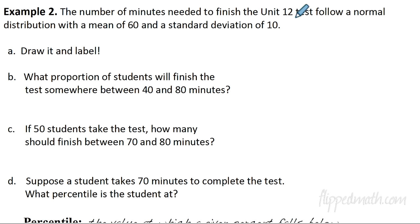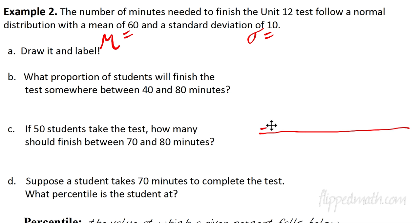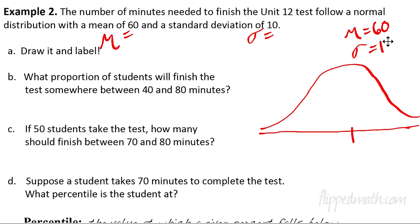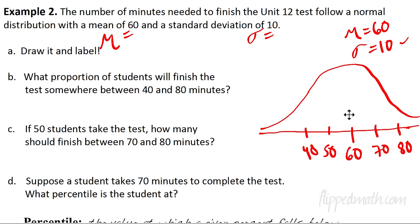Example 2: The number of minutes needed to finish the unit 12 test follow a normal distribution where mu equals 60 and sigma equals 10. We draw and label the bell curve. In the middle is 60, and going up by 10s we get 70 and 80, and going down we get 50 and 40. We go out to 90 as well.